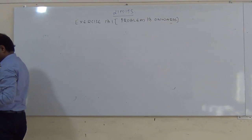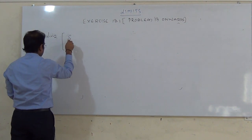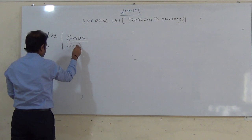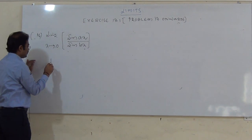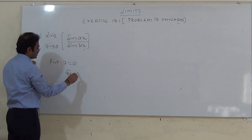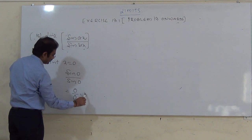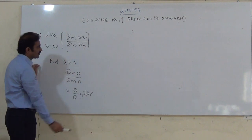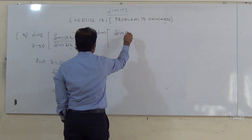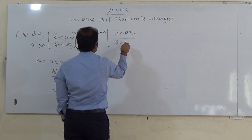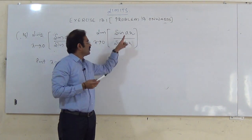Next, the 14th question: limit of sin(Ax) / sin(Bx) as x tends to 0. First, put x = 0: sin(0)/sin(0) = 0/0, which is IDF. Then we take limit of sin(Ax)/sin(Bx) as x tends to 0 and apply the same procedure as in the previous problem.